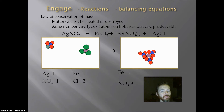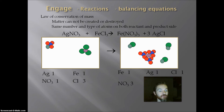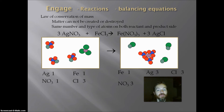The other substance on my product side is going to be AgCl. The AgCl has one silver and one chlorine. As I look at this reaction, there are not a lot of things that balance, so I want to start with chlorine. The only way I can balance the chlorine is to have three of those silver chlorides, which now gives me three silver and three chlorine. And the only way I can get my silvers to balance is to put three silver nitrates on the reactant side, which gives me three silvers and three nitrates.